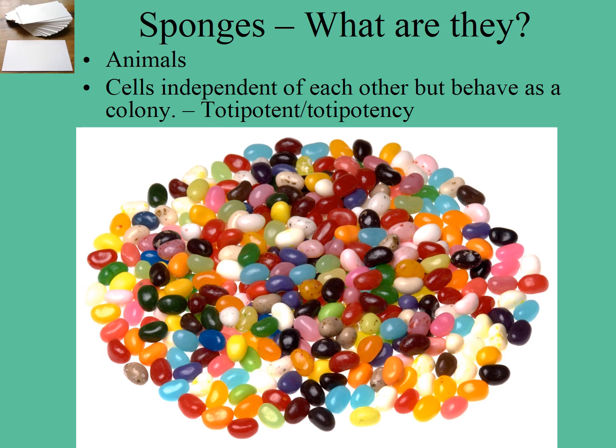Here's another term for you to know. That's called totipotency. So, each individual cell can be taken away and thought of as an individual organism. But when they're together, they behave as a colony. And each different cell can morph into the other types of cell within the colony. Totipotency means all. Potent means living or viable. And so all the cells can be taken away and be able to survive on their own, given the right conditions.